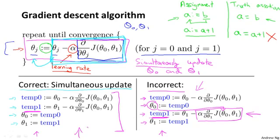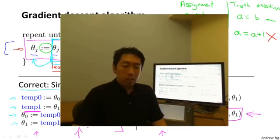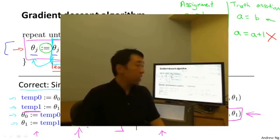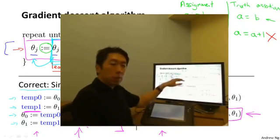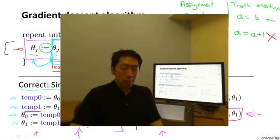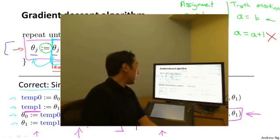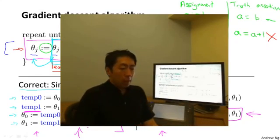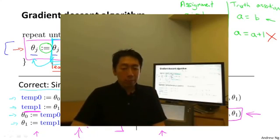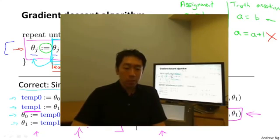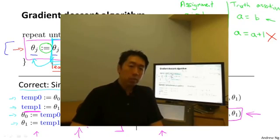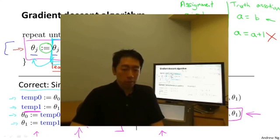So that's the outline of the gradient descent algorithm. In the next video, we're going to go into the details of the derivative term, which I wrote out but didn't fully define. If you've taken a calculus class and are familiar with partial derivatives, it turns out that's exactly what that derivative term is. But in case you aren't familiar with calculus, don't worry about it — the next video will give you all the intuitions and tell you everything you need to know to compute that derivative term, even if you haven't seen partial derivatives before.